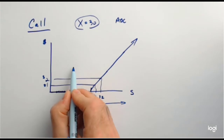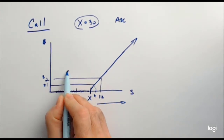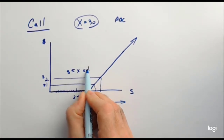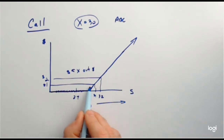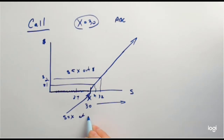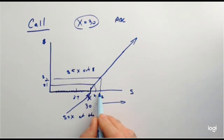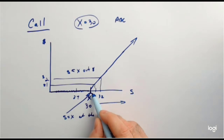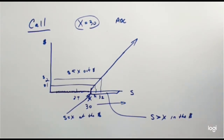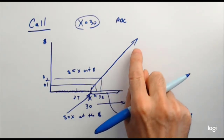That's a call option. When S is less than X, it's out of the money — right here in this area. When the stock price equals the strike at $30, S equals X, it's at the money. And when the stock price is above the strike, you're in the money. You want to buy options that eventually become in the money so you make some profit.